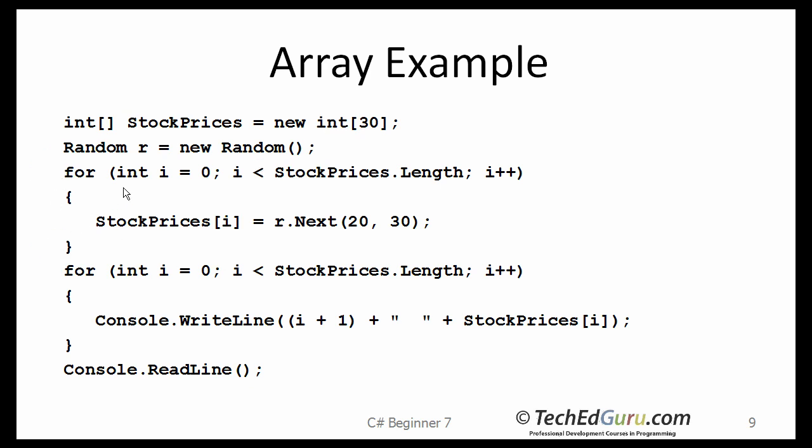And then, I set up a for loop here which goes from i equals zero to i less than the length of that array. This is a good way of setting up a loop for looking at or dealing with all the elements of an array. This will make sure that you never are outside the bounds of an array. Zero through i less than stock prices dot length.